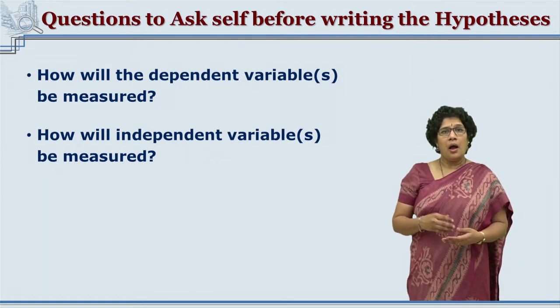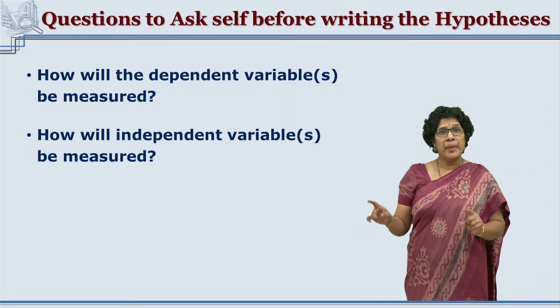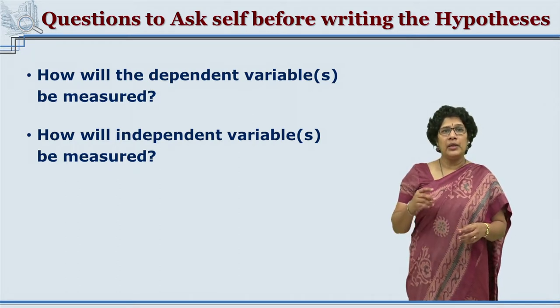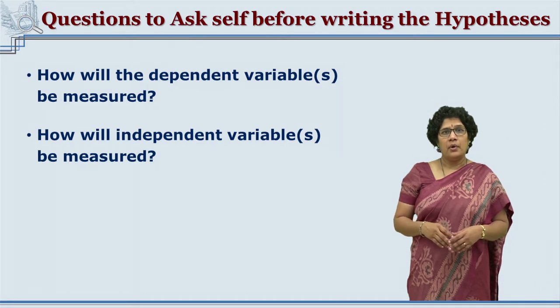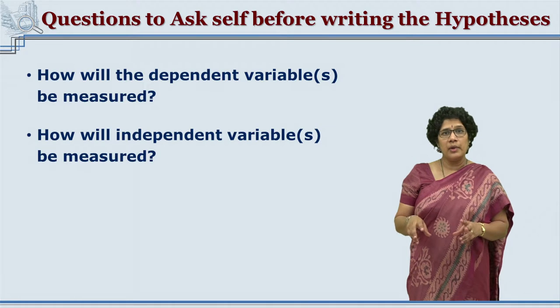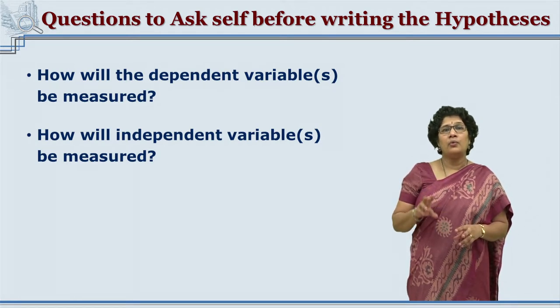We will understand the distinction between comparison and relationship further when we see the exact construction of statements. The next questions to be asked are: how will the dependent variable be measured, and how will the independent variable be measured? Since we talk about actual scores and measurements, these two questions about how variables will be measured are crucial.